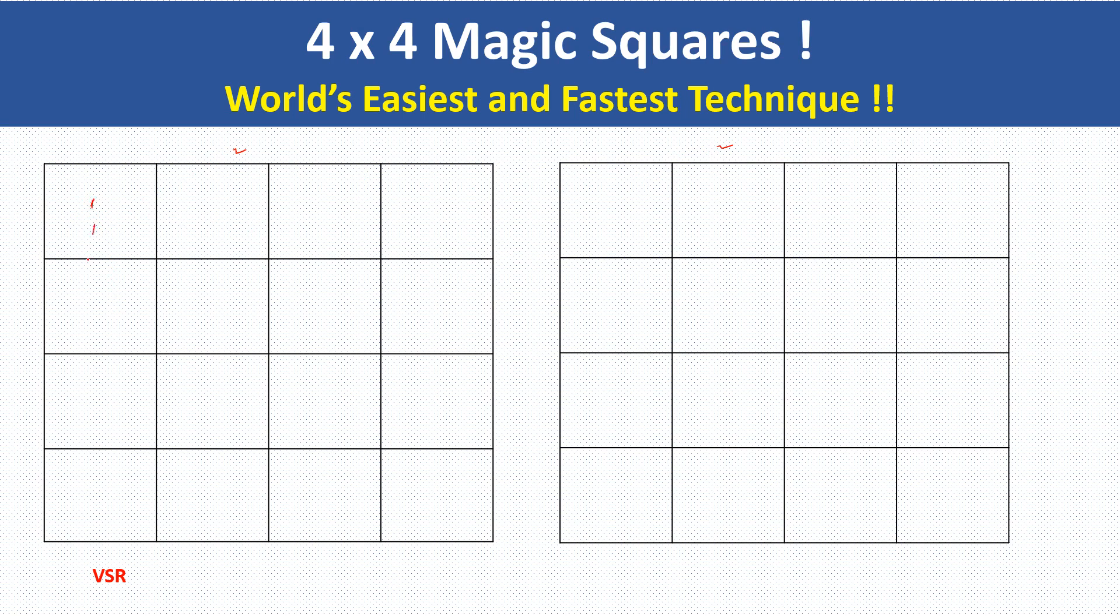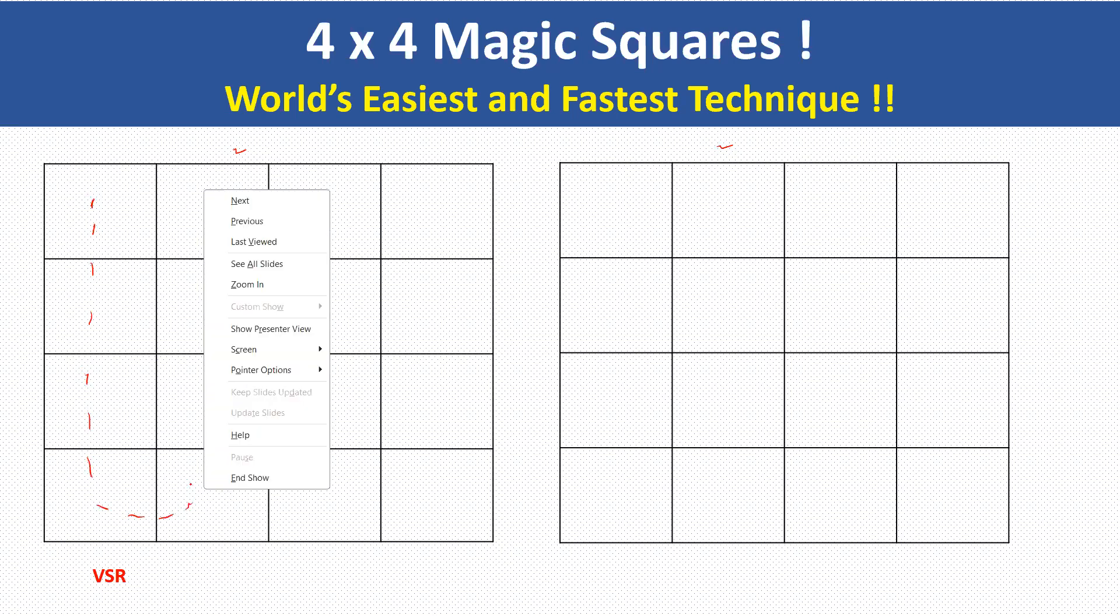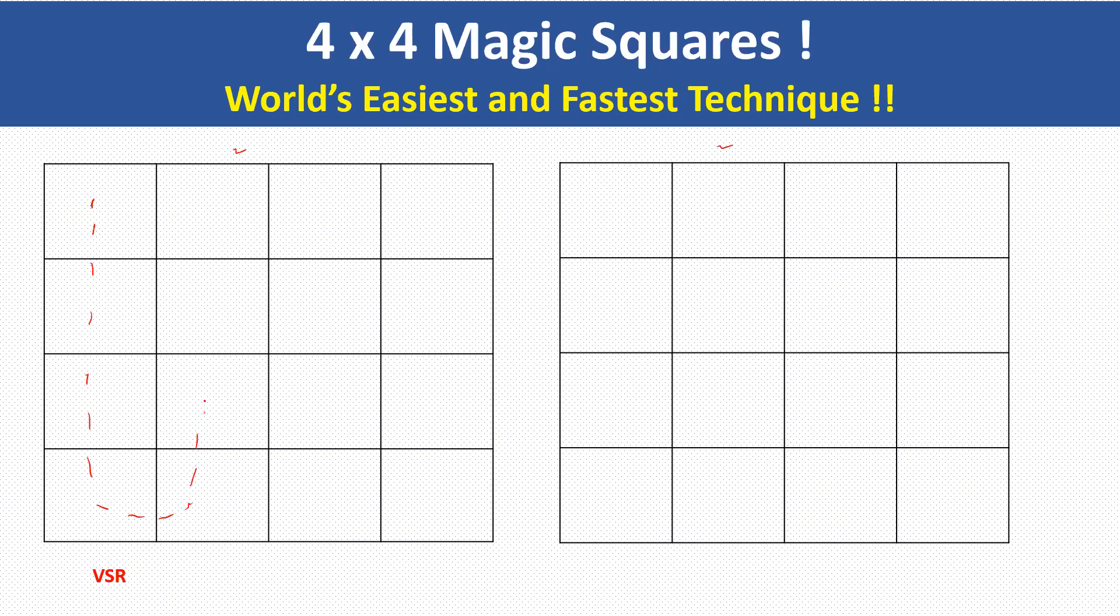What I do is, I just draw a dotted line of U like this. I just made a U shape here. And in another two squares, I make a reverse U square like this. I am just making a reverse U. One U like this and the reverse U. That's all.